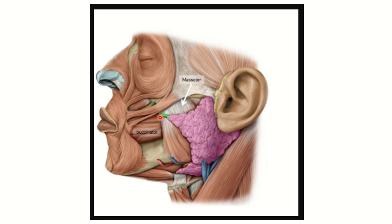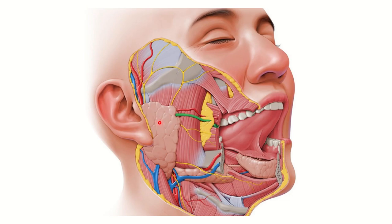The parotid duct overlies the masseter muscle. At the anterior border of the masseter muscle, it enters the buccinator muscle. We can see here that the buccinator muscle is pierced by the parotid duct, which then turns into the vestibule of the mouth.